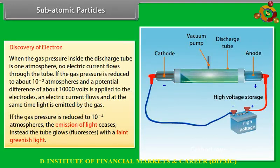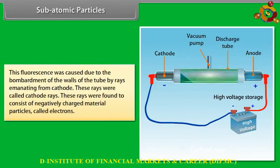Instead, the tube glows with a faint greenish fluorescence. This fluorescence was caused by the bombardment of the walls of the tube by rays emanating from the cathode. These rays were called cathode rays, and were found to consist of negatively charged material particles called electrons.